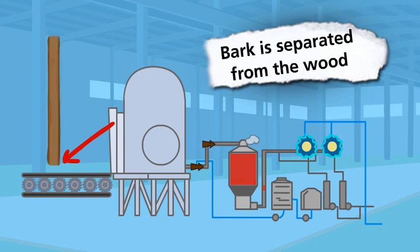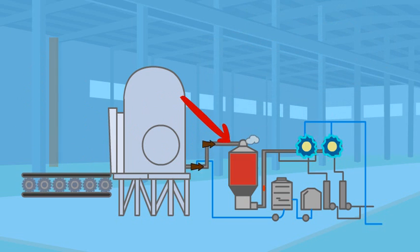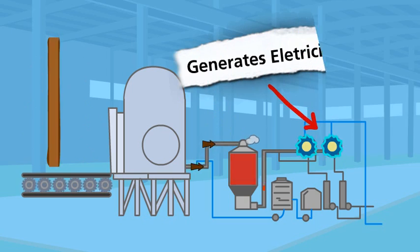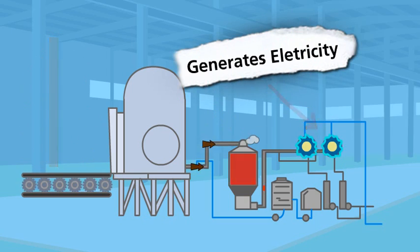The bark is separated from the wood and taken to a biomass boiler that generates steam, which in turn generates electricity by means of two turbines.